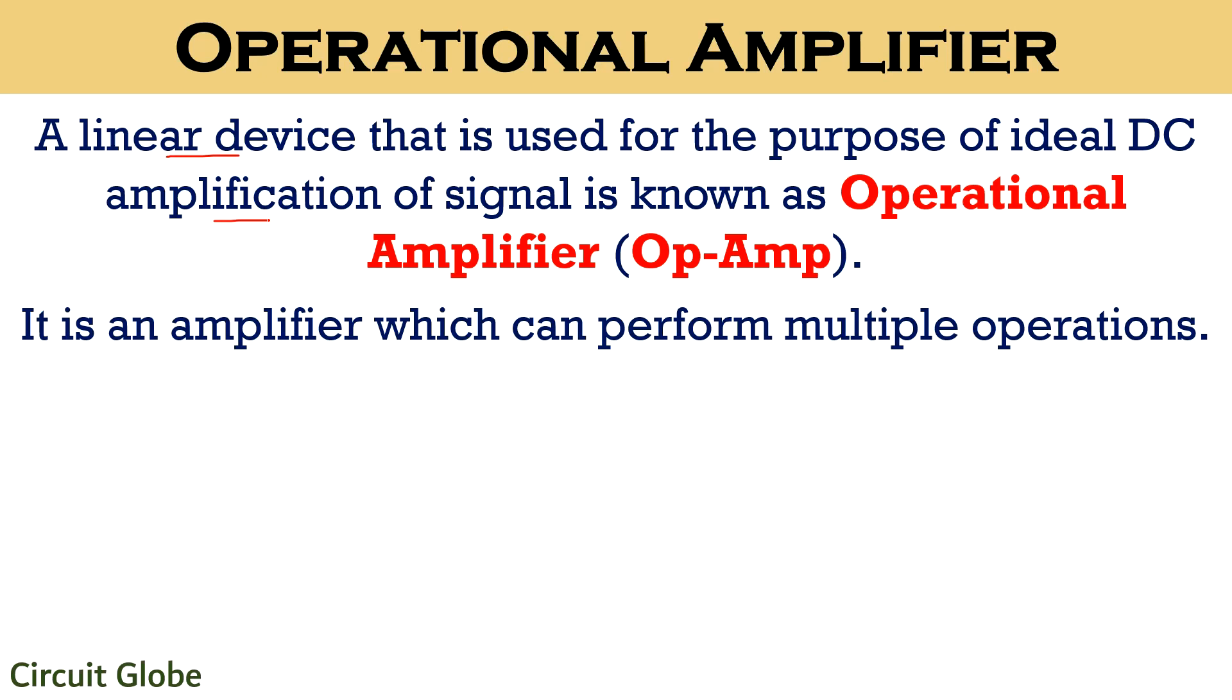Op-amp is basically a three-terminal voltage amplifying device and out of the three terminals, there are two high impedance inputs and the third one belongs to the output. Here we have shown the circuit configuration of an operational amplifier. V1 and V2 represent the two inputs and Vout is the output. Plus V and minus V represent the supply provided.